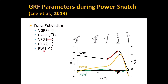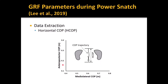PW means power, and this point was used as power. Power was calculated by the product of the vertical ground reaction force and the vertical barbell velocity. Horizontal center of pressure (H-COP) was also used as one of the ground reaction force parameters in this study. The black line represents the center of pressure trajectory, where the horizontal axis means medial-lateral center of pressure and the vertical axis means anterior-posterior center of pressure.